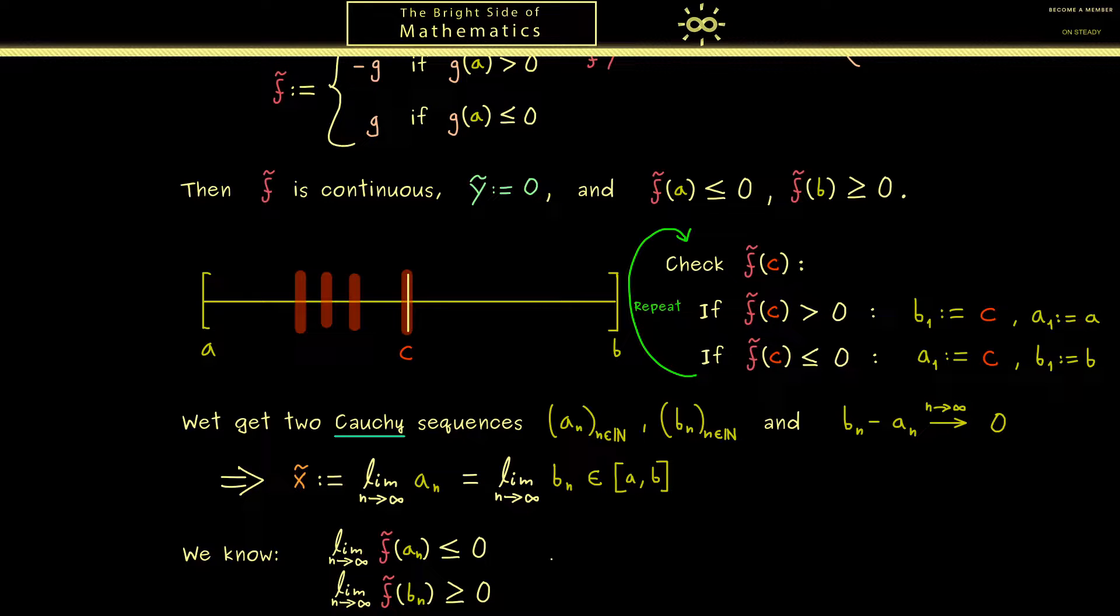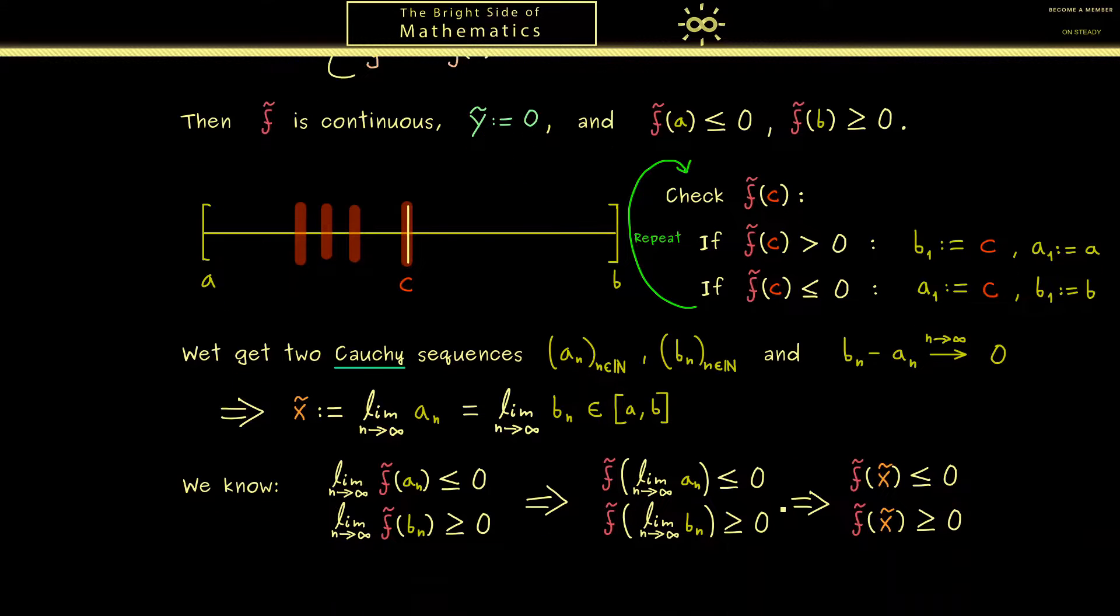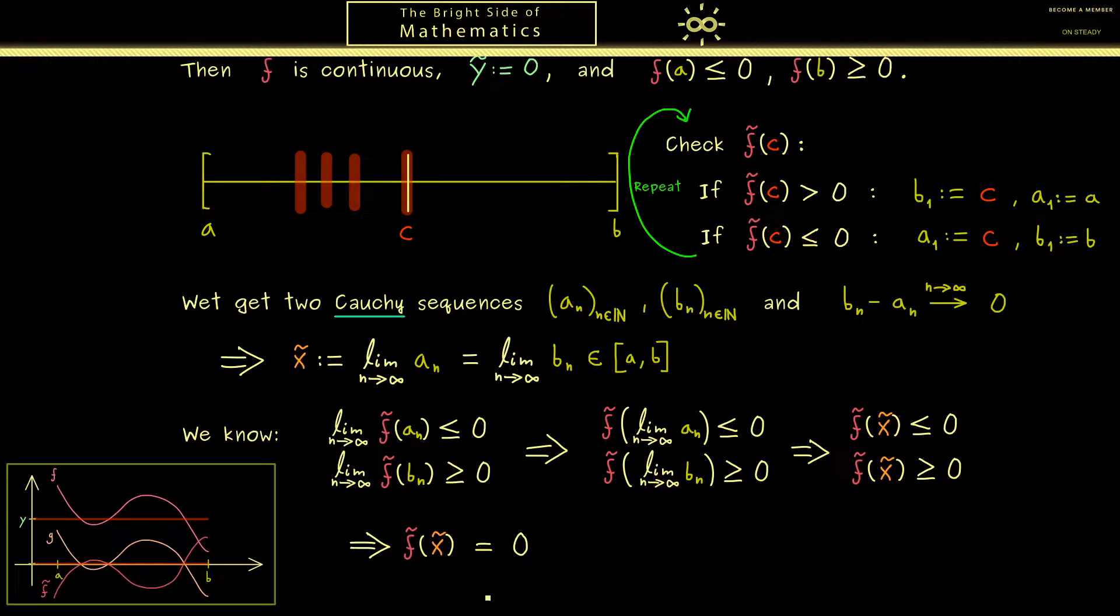And there you see we can use the continuity of the function f tilde and push the limit inside. Then you see it looks like this and we can substitute this limit with x tilde. So what we get out is a number f tilde of x tilde which is less or equal than 0 and greater or equal than 0. Hence the only possibility is that this number is exactly 0. And there you see indeed we have solved the problem for our function f tilde.